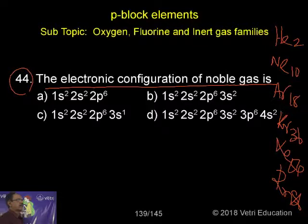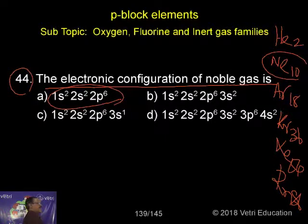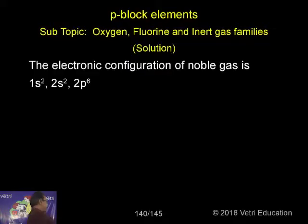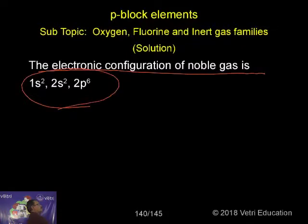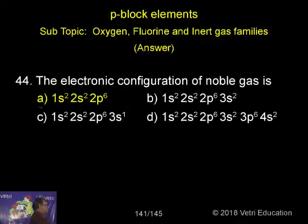So just kindly see here. There are 10 electrons — the second group, 10. So the configuration is 1s2 2p6. That is neon. So this is the configuration of noble gas. The correct answer is: the electronic configuration of noble gas is 1s2 2p6, that is nothing but neon. So this is the correct answer.